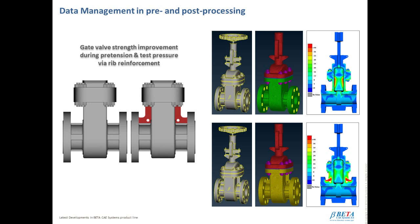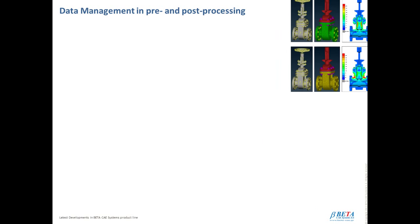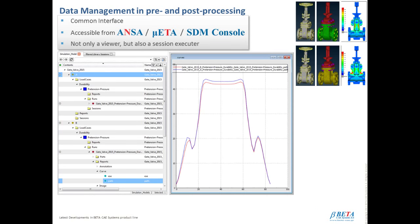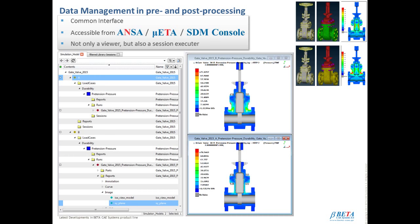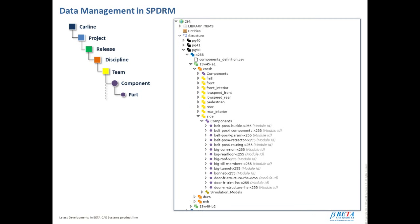As mentioned in the beginning, ANZA alone offers data management capabilities in the area of CAE preprocessing. ANZA can create and maintain a data repository in a directory in the file system without the need for a database. In the same manner, META has direct access to this data repository and can update it with simulation runs, reports, etc. accordingly. This solution is suitable for small and medium-sized teams. So, when we are talking about data management in pre- and post-processing, we are talking about a common interface, accessible from ANZA, META, and SDM Console, that is not only a viewer, but also a session executor.